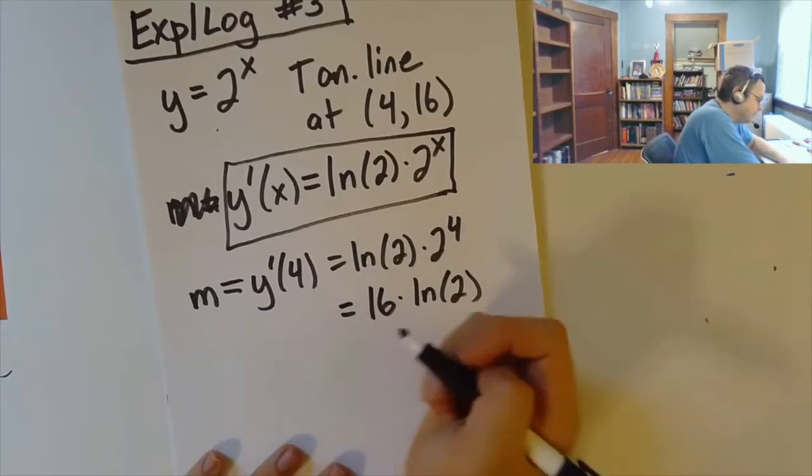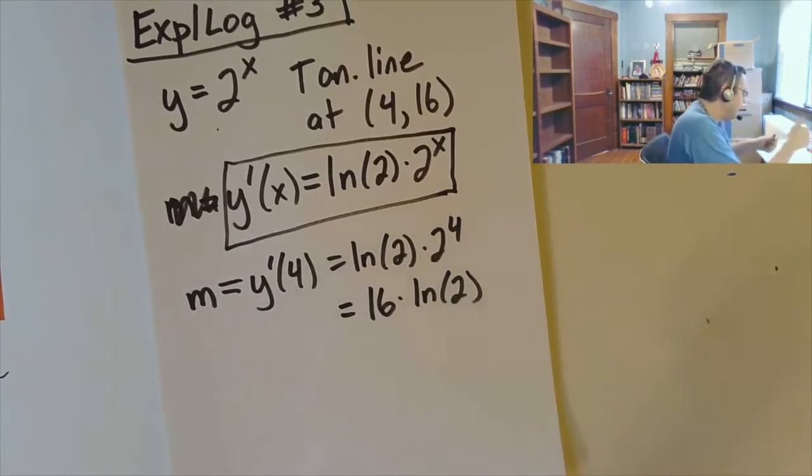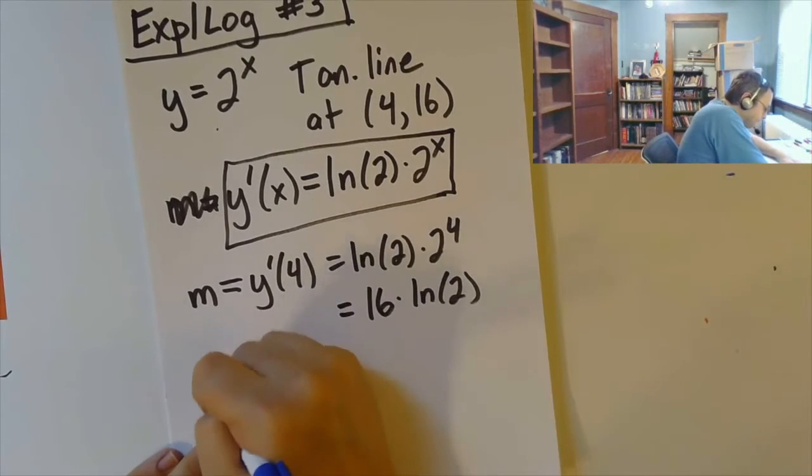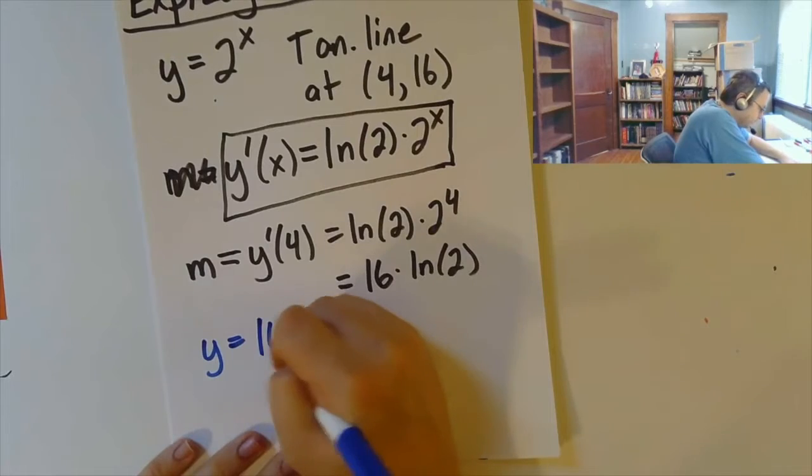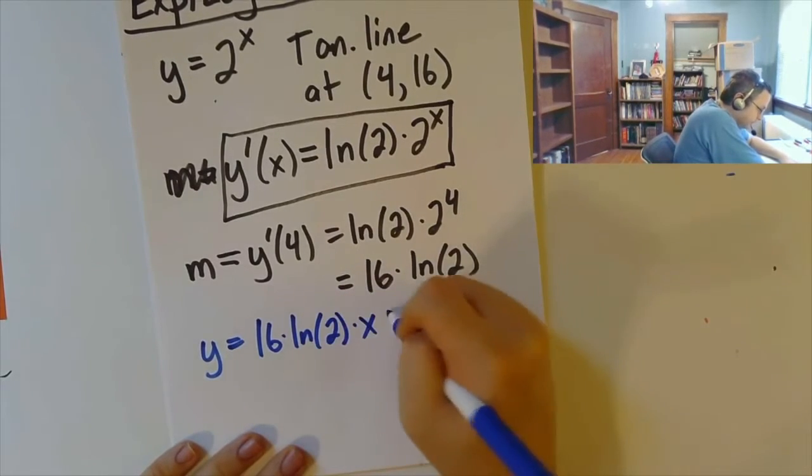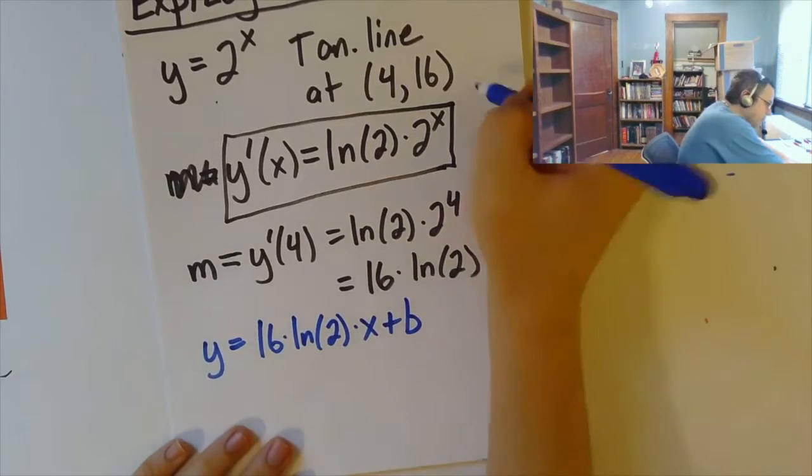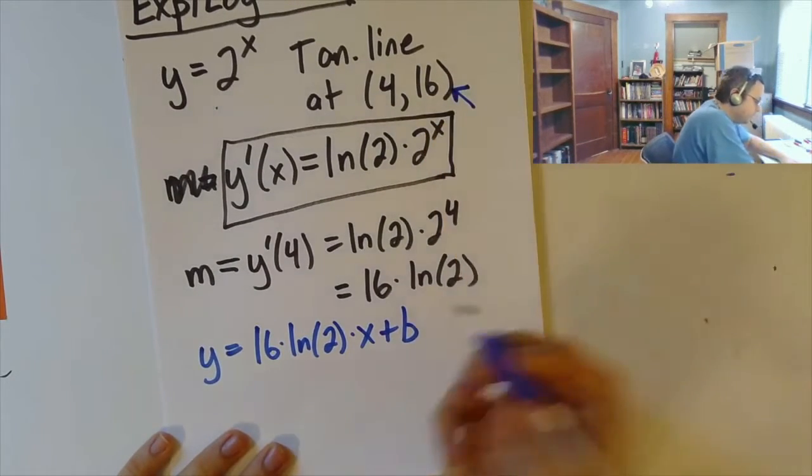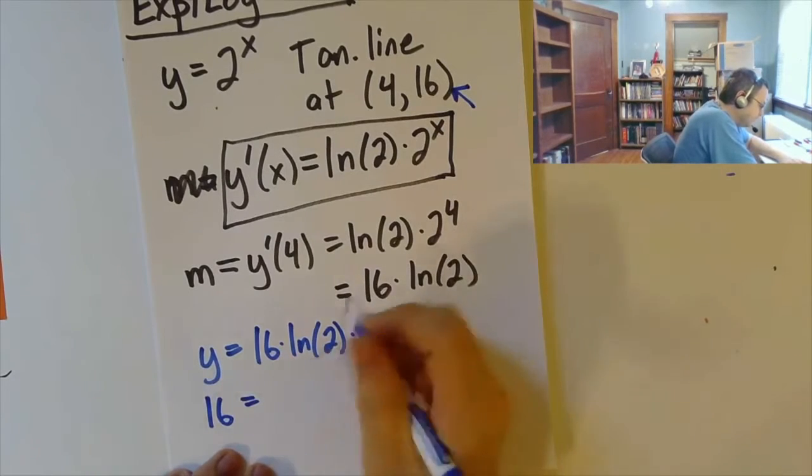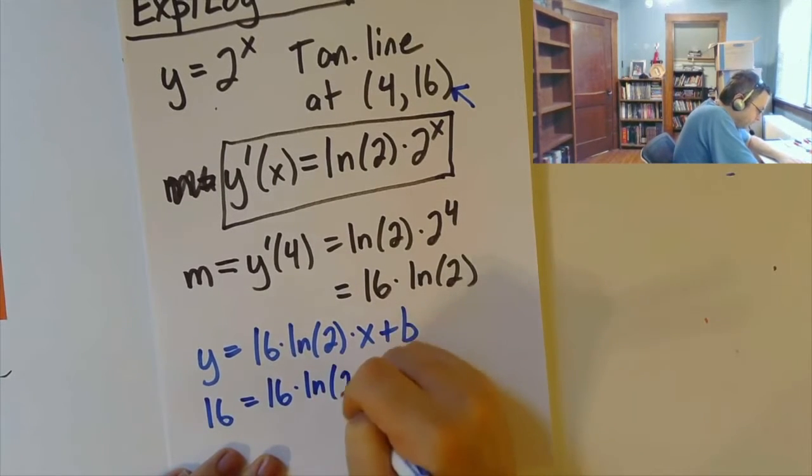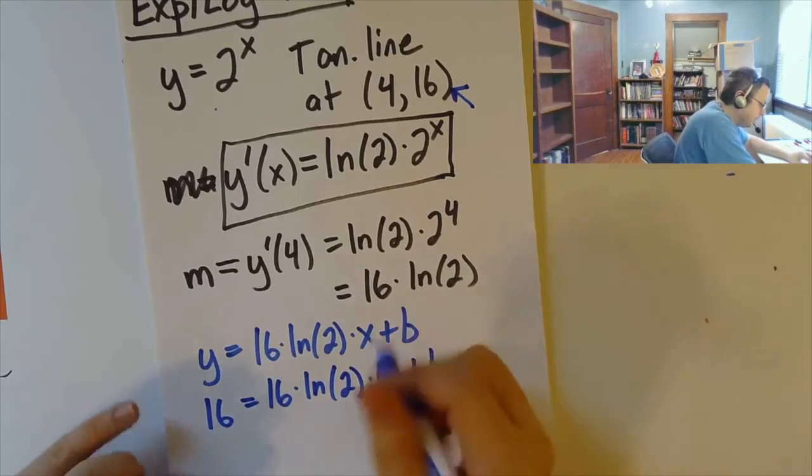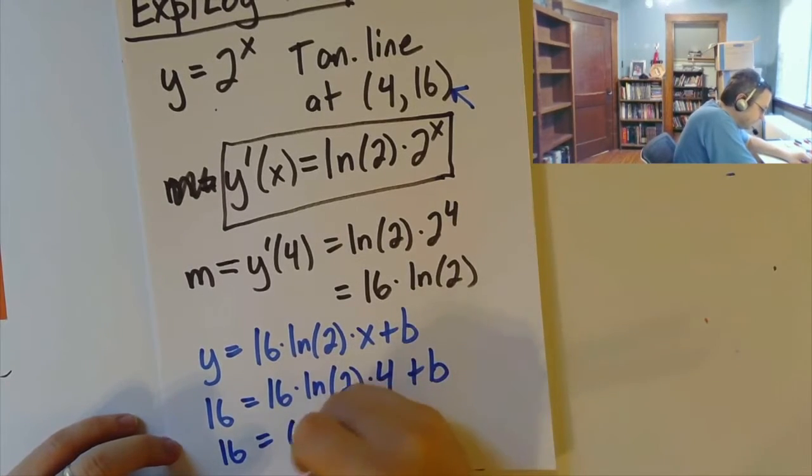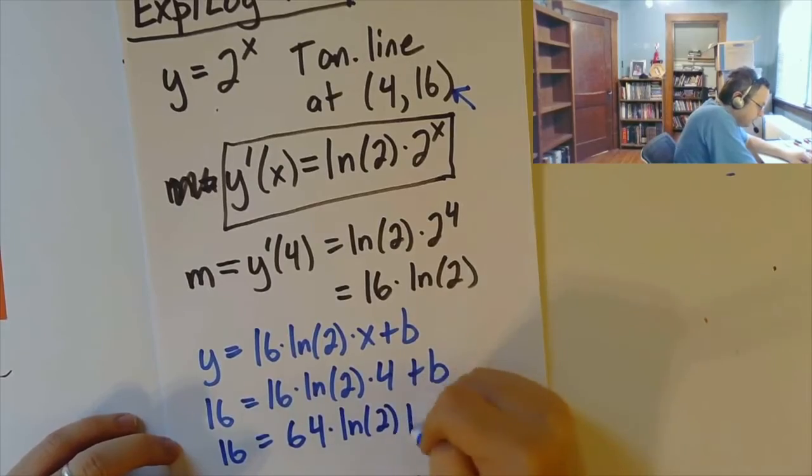And so that means my tangent line looks like y equals that slope, 16 times the natural log of 2 times x plus b. And again, we can go back and plug in the point that we started with. So I'm going to get 16 is equal to 16 times the natural log of 2 times 4 plus b. So that is to say 16 is 64 times the natural log of 2 plus b.